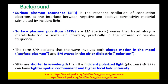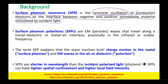Surface plasmon resonance is nothing but the resonant oscillation of conduction electrons at the interface between negative and positive permittivity material when stimulated by an incident light. The conduction electrons start to resonate. The surface plasmon polaritons (SPPs) associated with the SPR are basically electromagnetic waves that travel along a metal-dielectric interface, practically in the infrared or visible frequency range.